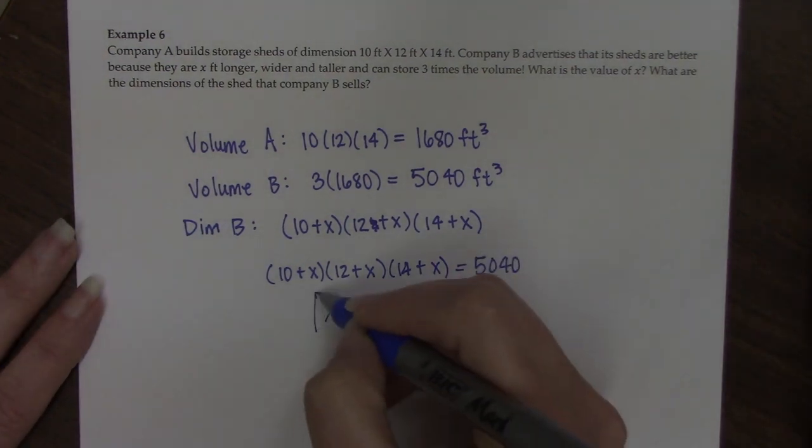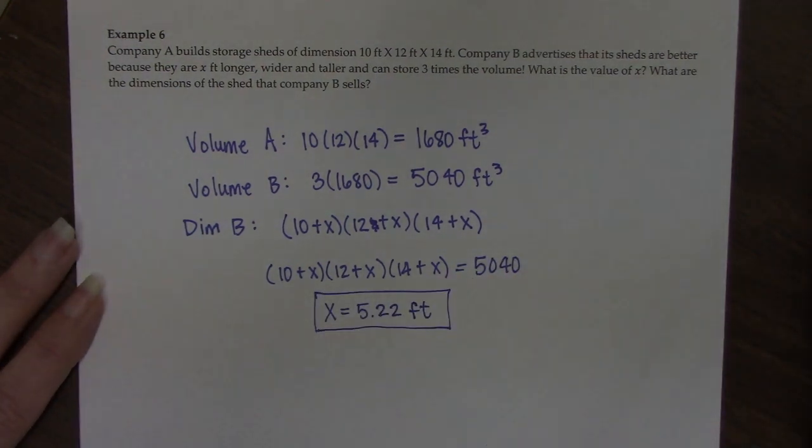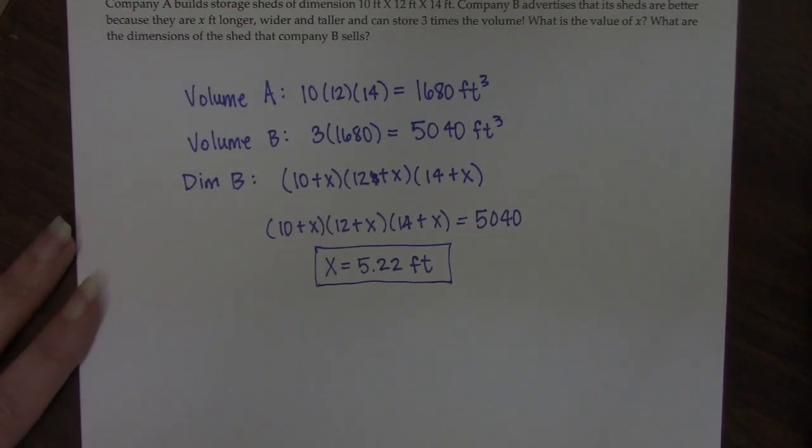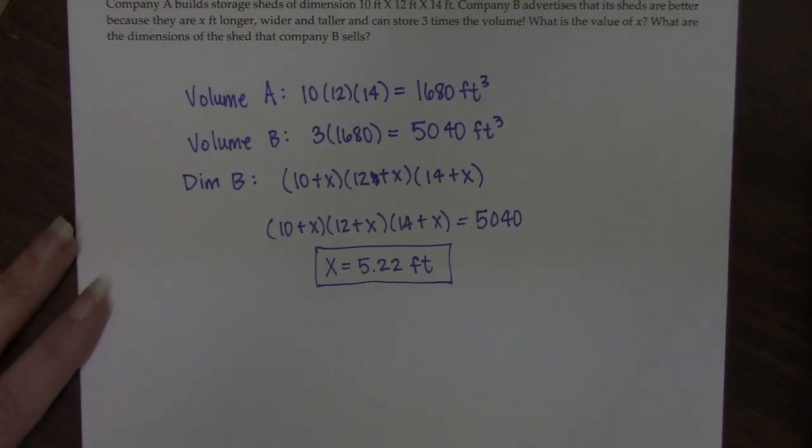So this is the first thing they asked for. What is this value of X that they advertise that they're bigger than Company A? And then it says, what are the dimensions of the new shed?